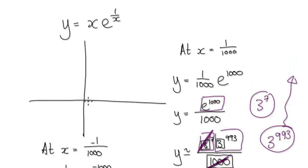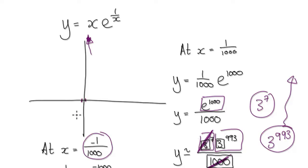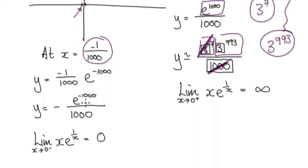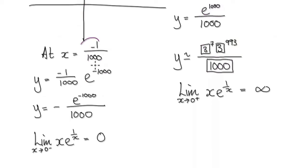So just to the right of zero, the value is going to be very, very big, and the graph should go all the way up. Now let's investigate what happens just to the left of zero — let's select x equals negative one over one thousand.